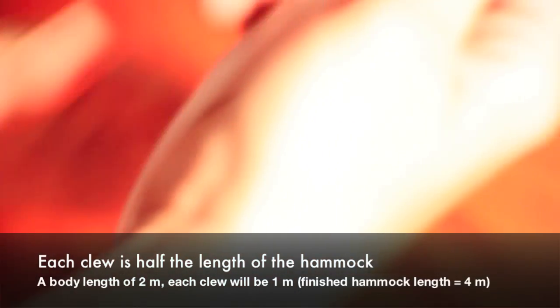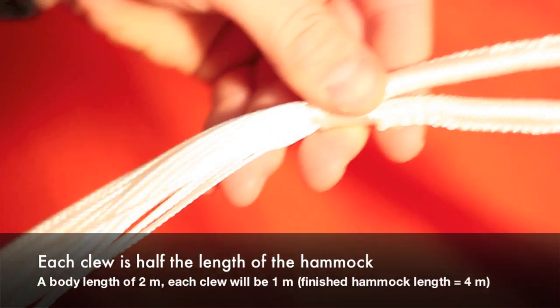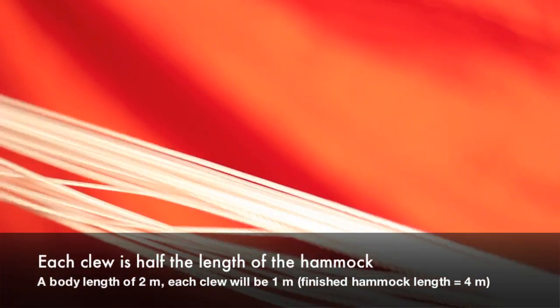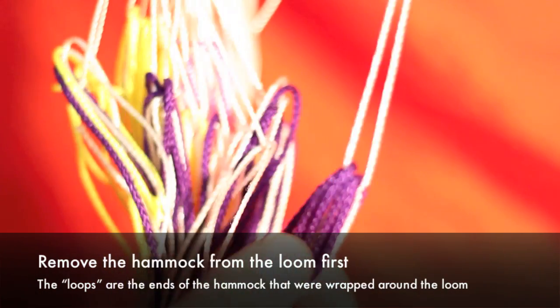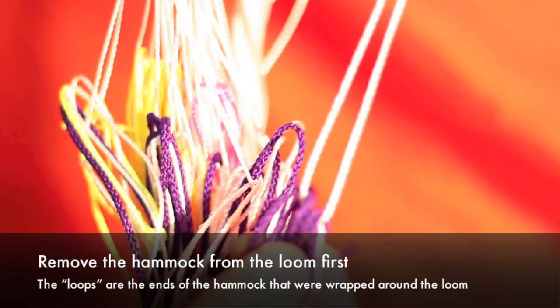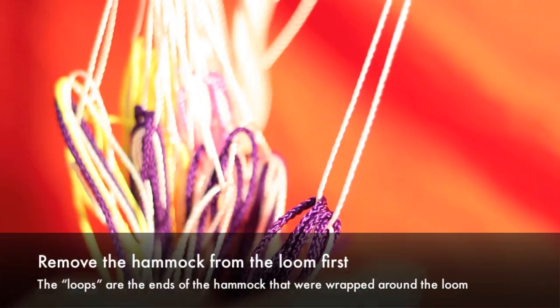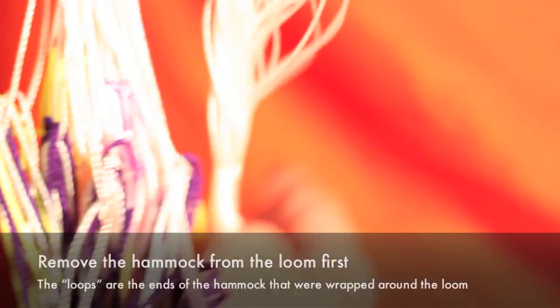To finish off the hammock, to make what we would call the clue and the nettles. All of the nettles are the same length. You gather up about six of the hammock loops here and thread the nettle through. It's just one continuous piece. And it really helps to have a peg where you can peg the end and loop it around.